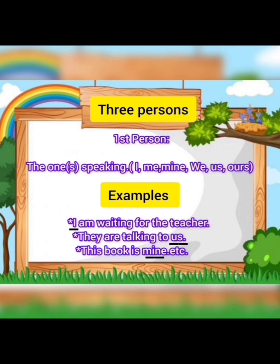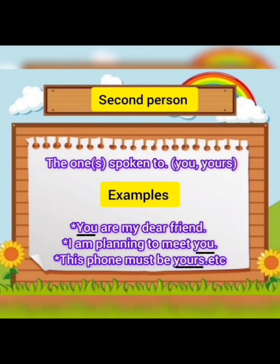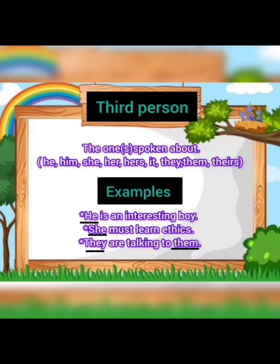Next is second person pronouns — the one spoken to. For example: you and yours. 'You are my dear friend.' 'I am planning to meet you.' 'This phone must be yours.' Then third person pronouns: he, him, she, her, hers, it, they, them, theirs. For example: 'He is an interesting boy.' 'She must learn ethics.' 'They are talking to them.' The underlined words are considered third person pronouns.